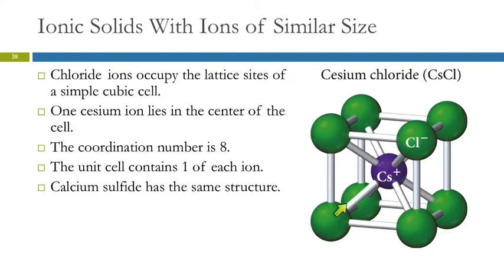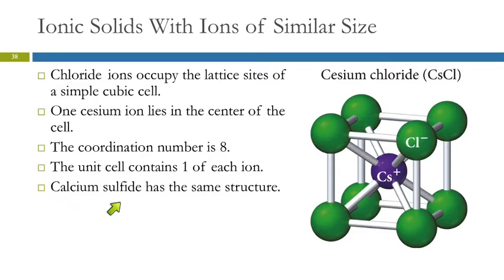We looked at this before with just the green balls — no purple ball — and said it contained one atom: one-eighth each of eight different corner atoms. So this cell has one chloride ion plus one cesium ion. Other ionic solids with a one-to-one ratio and similar sizes will have the same structure. An example is calcium sulfide: calcium has a 2-plus charge, sulfide has a 2-minus charge, and it forms a similar structure.